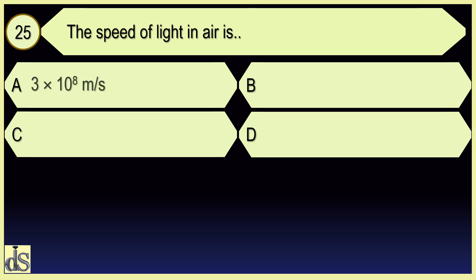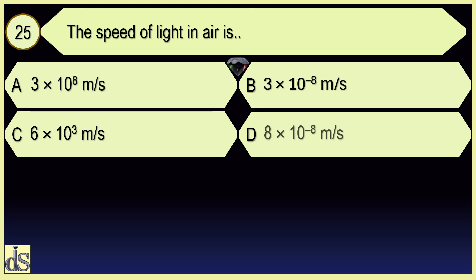The speed of light in air is 3 × 10⁸ meters per second.